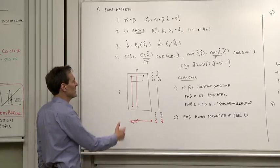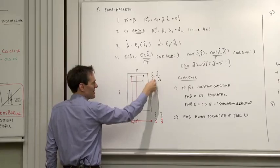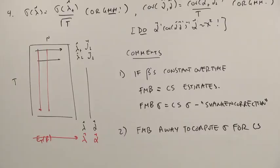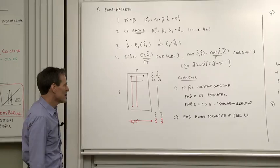Maybe it'll help to do that schematically. The Fama-Macbeth says, at each date, run a regression. Get a lambda at each date and then average the lambdas. The cross-sectional regression says, first take the average of the returns and then run one cross-sectional regression. If those are linear functions, the order in which you average and regress can't make any difference. That may be clearer than a bunch of algebra, which proves the same thing.